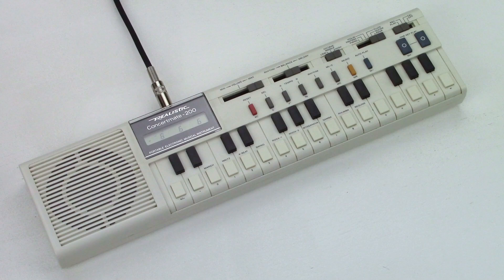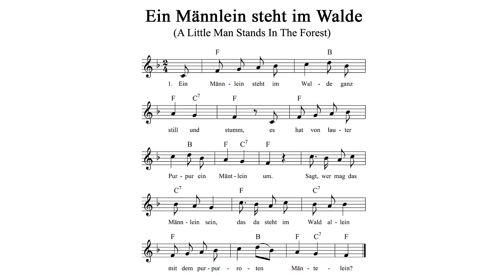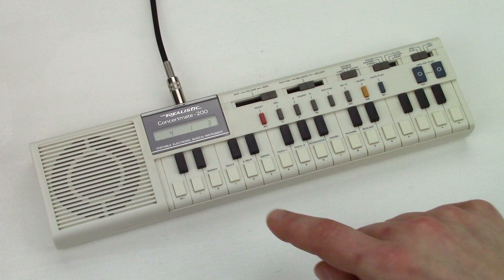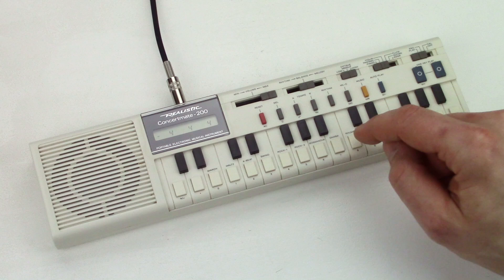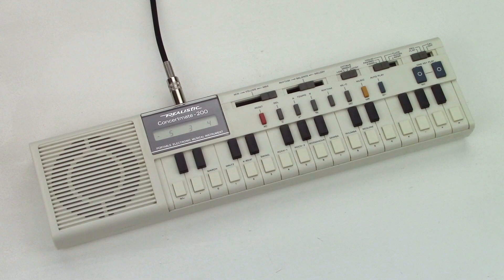The first part reminds me of 'Ein Männlein steht im Walde' — 'A little man stands in the forest.' It's not exactly the same, but quite close. The second part reminds me of 'Vogelhauchzeit,' Bird Wedding. The melody is a bit different, but the rhythm is the same. Of course all children's songs have simple melodies and rhythms. But my first thought was that the programmer unconsciously mixed two German folk songs together.